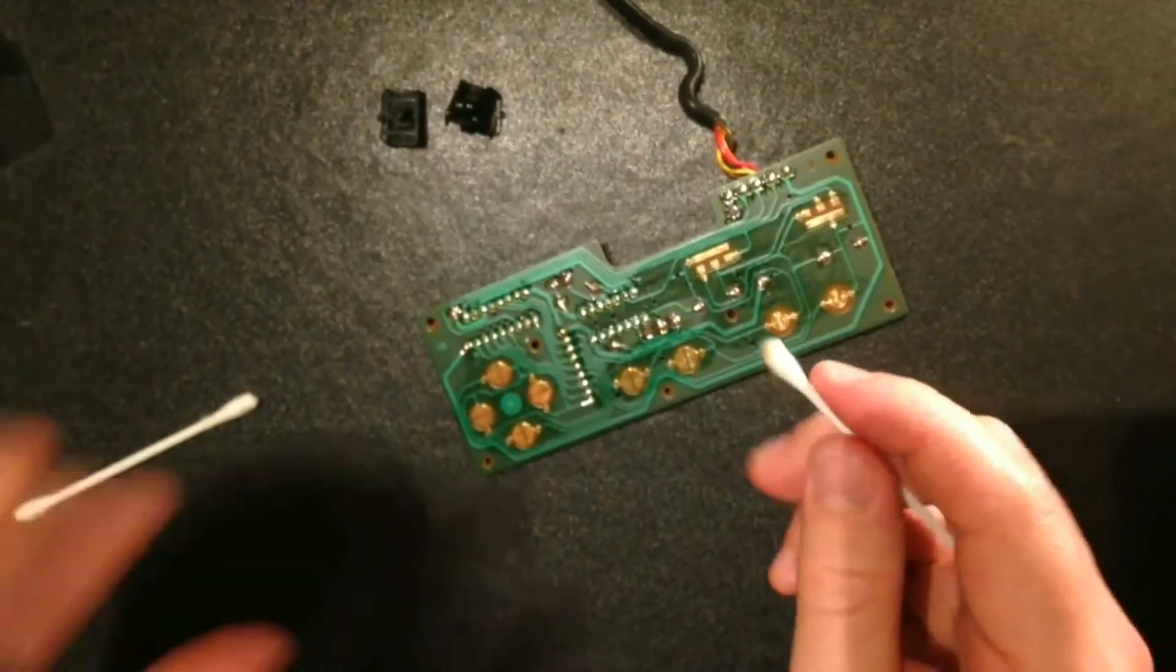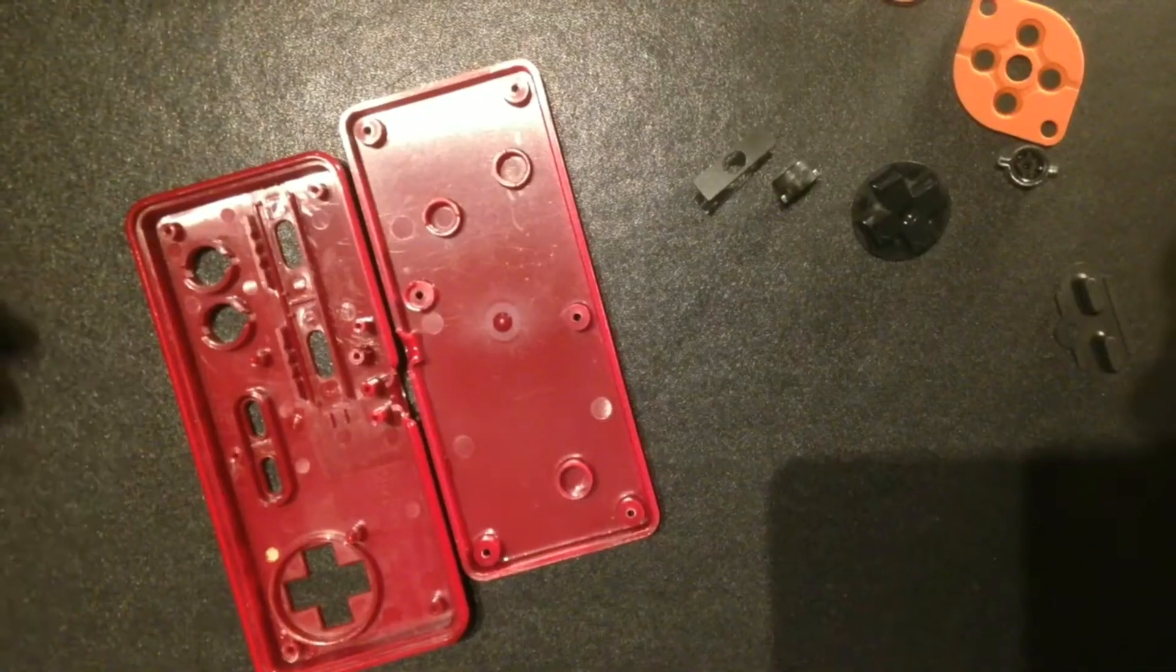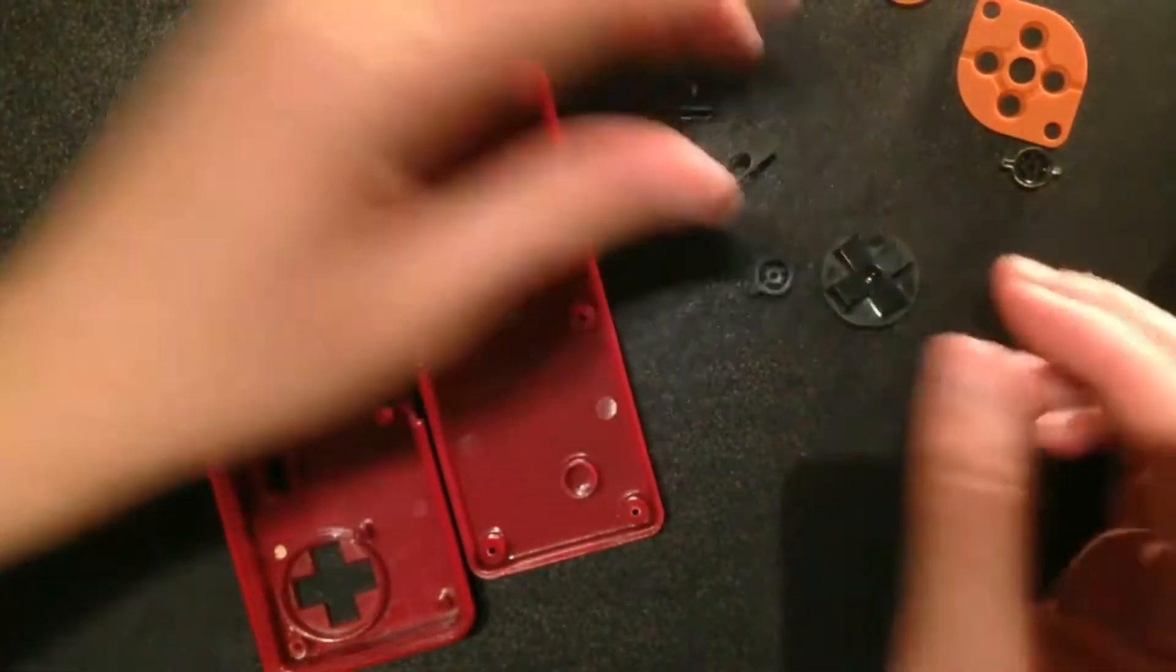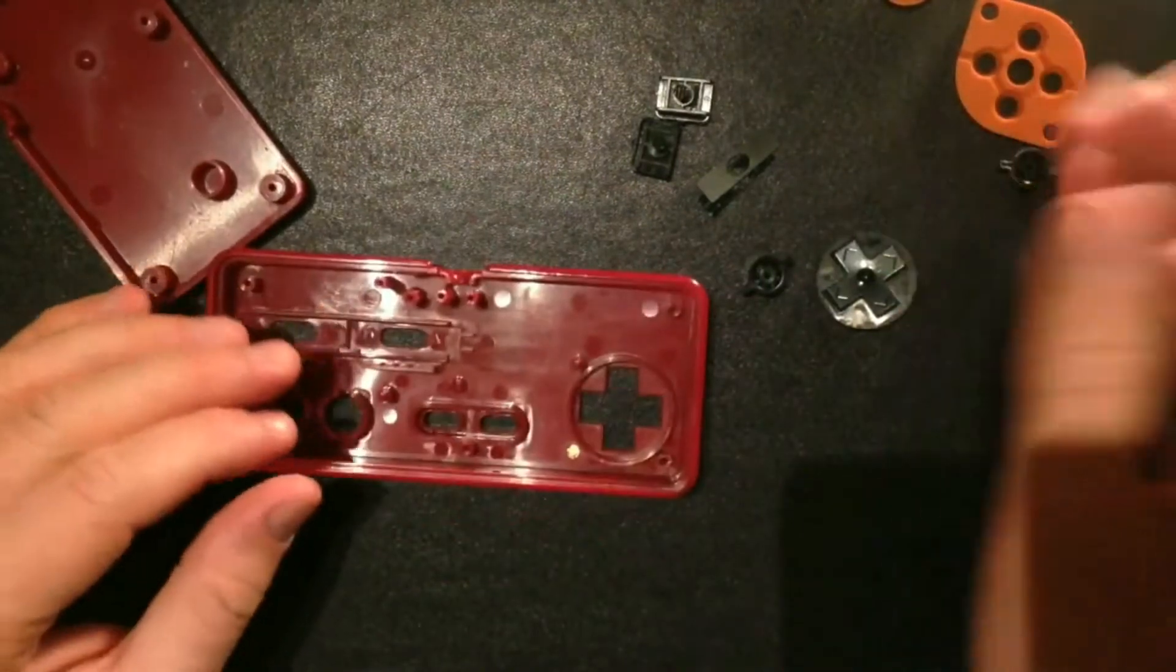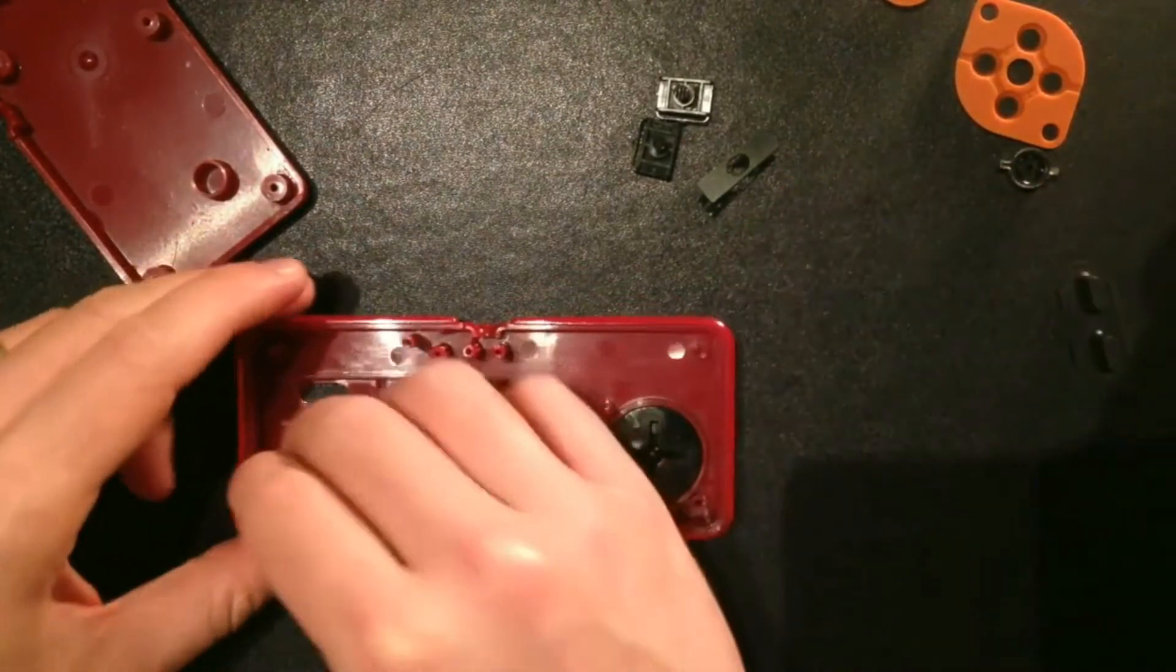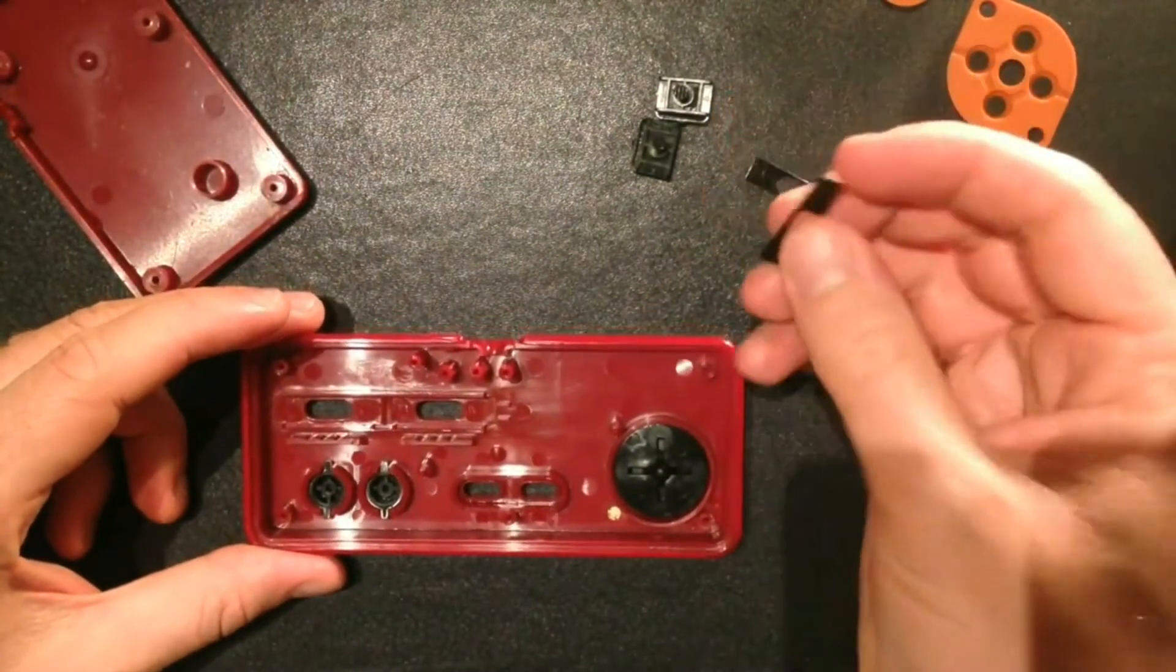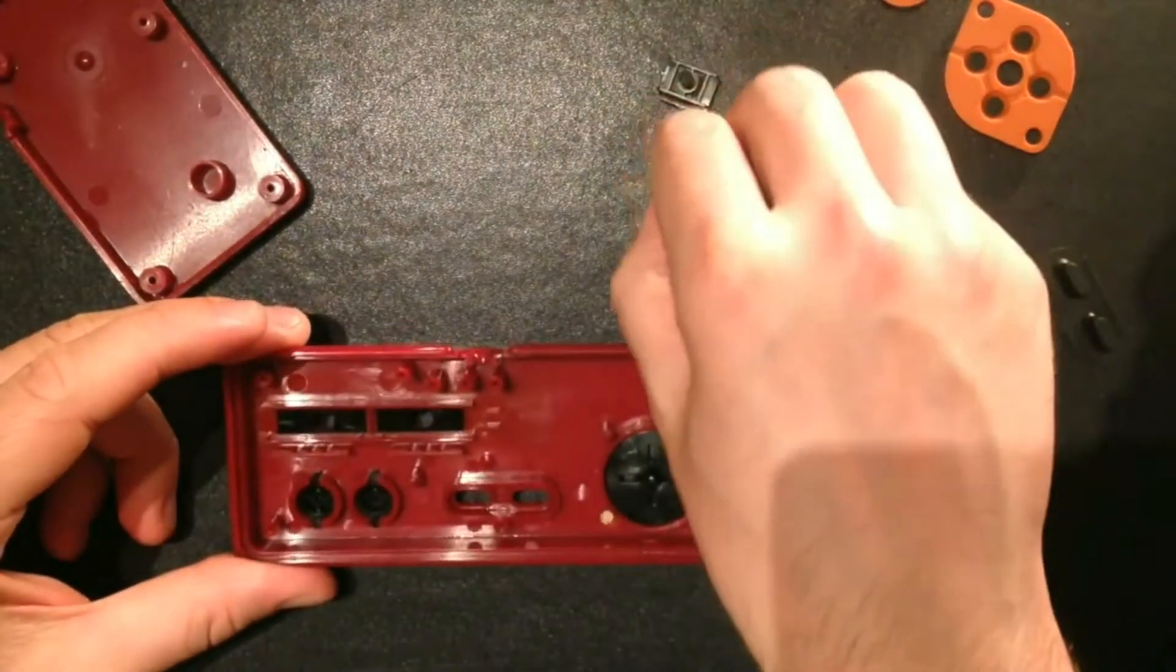Okay, so the next thing to do is to reassemble the pad. Now we've got our circuit board cleaned, the rubber parts cleaned, the outer shell cleaned, all the buttons and hard plastic parts cleaned. All that's left to do is reassemble the pad. What we start with is our d-pad, put that in, and our buttons A and B.